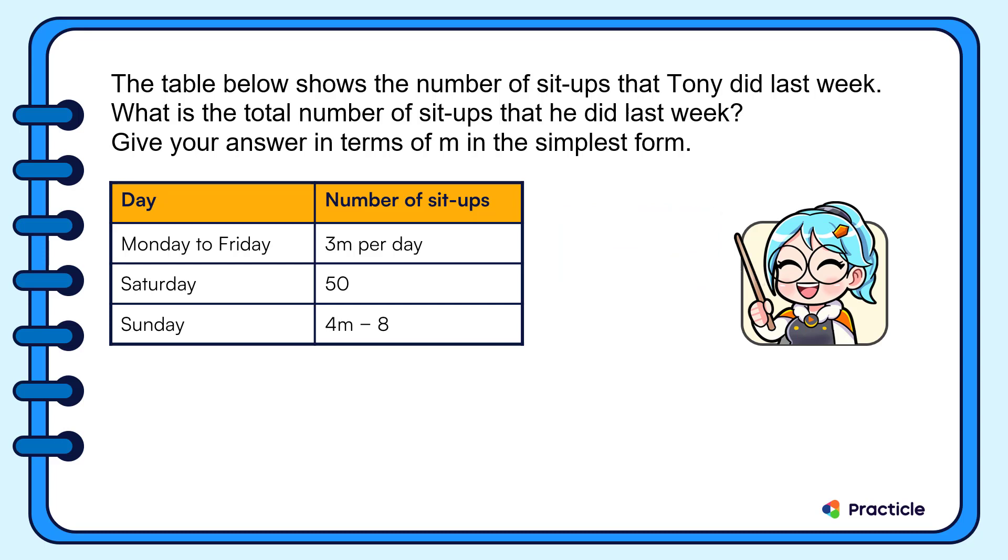Let's start with the number of sit-ups that he did from Monday to Friday. Since he did 3M sit-ups per day and there are five days from Monday to Friday, let's multiply 3M by 5.